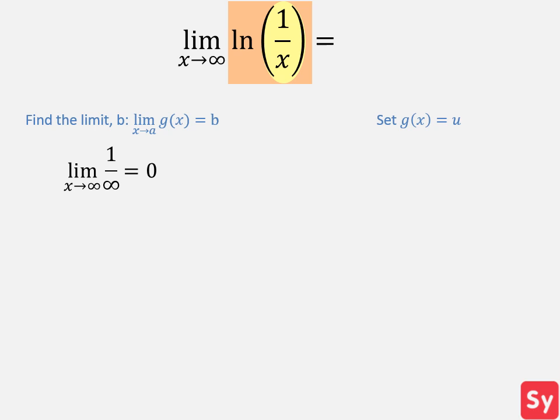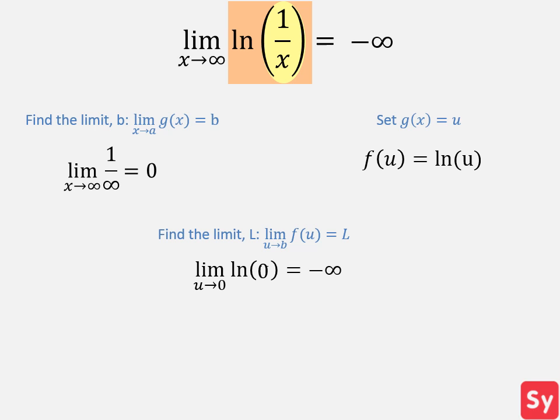Next, we set g of x equal to u. We now have f of u equals ln of u. Finally, we find the limit L. We have the limit of ln of u as u approaches 0. We use substitution to substitute 0 in for u and get negative infinity. Negative infinity is the answer.